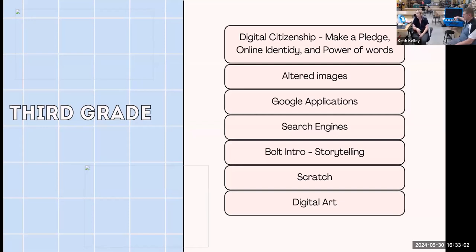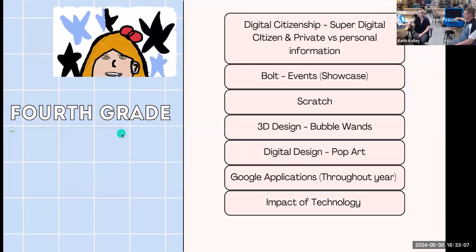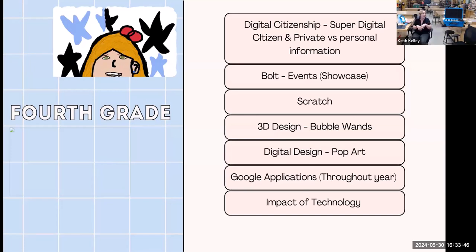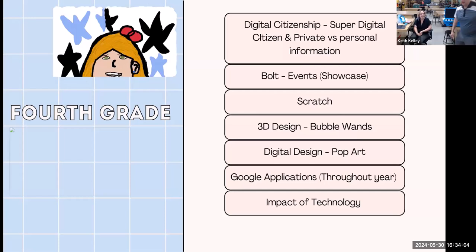We also do some Scratch and digital arts in third and fourth grade. In fourth grade we do digital citizenship and more with Bolt events — students can use different events to make Bolt do different things. Scratch has been a really cool project. We did 3D design with bubble wands — students used Tinkercad to design them, following the entire design process. They had to think about what works well with a bubble wand, draw it, get on Tinkercad and figure out all the tools, and then I printed them on a 3D printer. This gives them an introduction to Tinkercad before eighth grade where we do more advanced work.